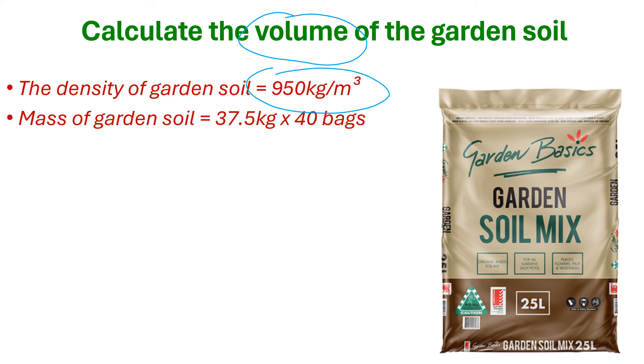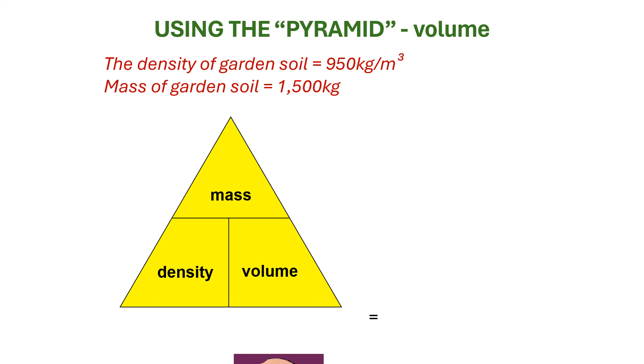So we need to do a bit of multiplication here. 35 and a half times 40, that equals 1500 kilograms. I've just multiplied these two figures. So again, step one, we determine which of these three variables are we trying to calculate. We know density. We know mass. We are trying to work out volume.